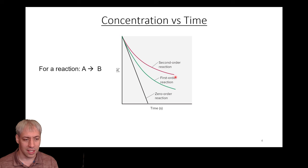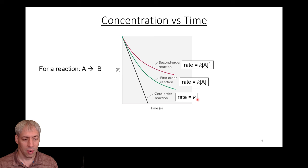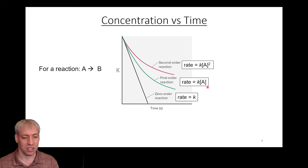If we have a zero order reaction with respect to A, rate is equal to K. If we have a first order reaction, rate is equal to K times A to the one. Second order: rate is equal to K times A to the two. Depending on what the rate law of the reaction is and how the mechanism actually proceeds, you get different changes in concentration over time.